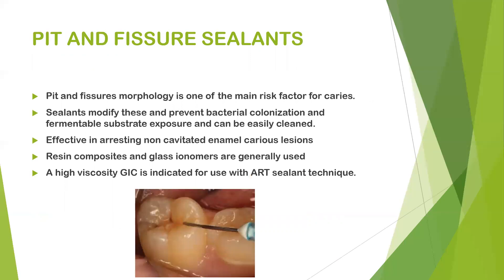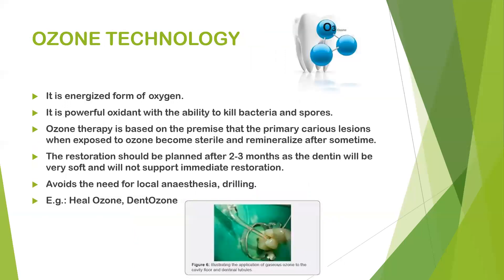Deep fissure morphology is one of the main risk factors for caries, especially in molars. Sealants modify this morphology, prevent bacterial colonization and fermentable substrate exposure, and allow the area to be easily cleaned. They are effective in arresting non-cavitated and early carious lesions. Resin composites and glass ionomer are the most commonly used pit and fissure sealants.